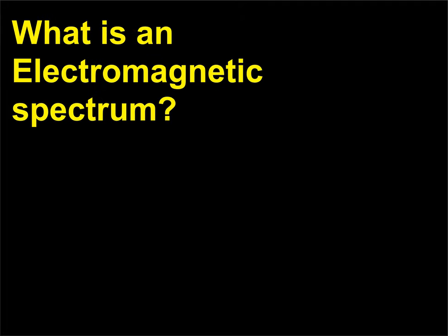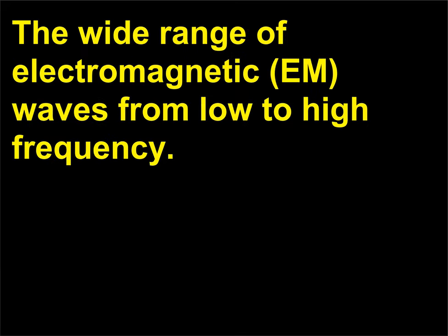What is an electromagnetic spectrum? The electromagnetic spectrum is the wide range of electromagnetic (EM) waves from low to high frequency.